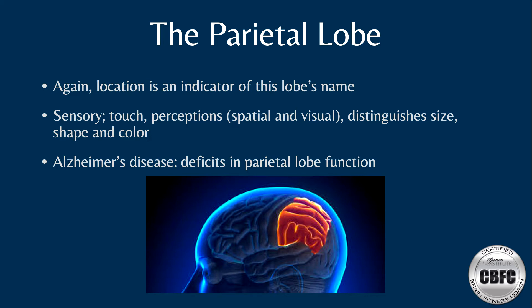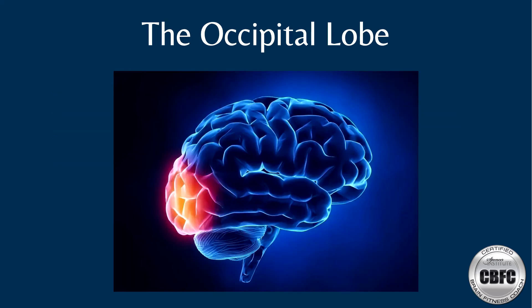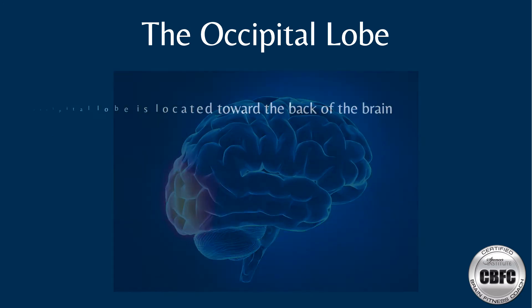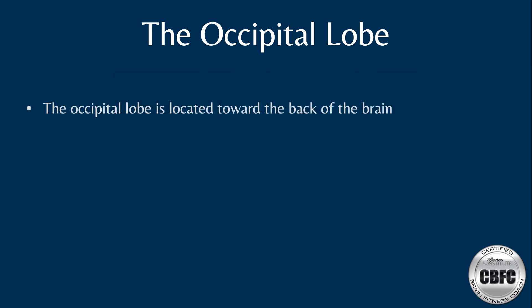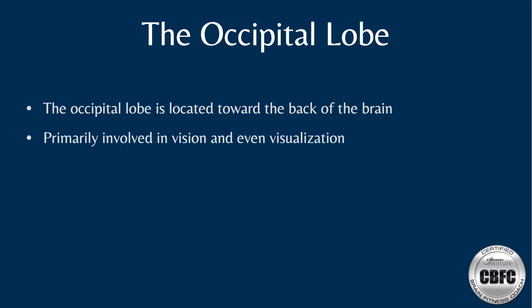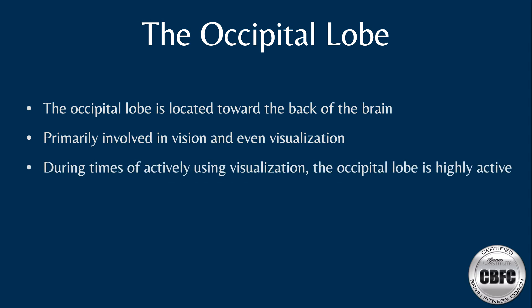The occipital lobe is located in the back part of the brain and is primarily involved in vision. Even visualization emanates from the occipital lobe, and during times of visualization the occipital lobe is highly activated.